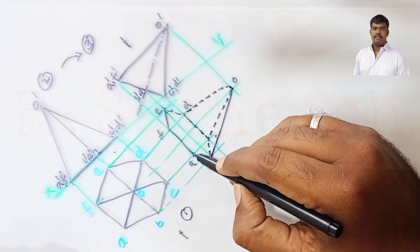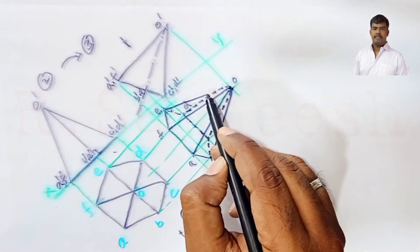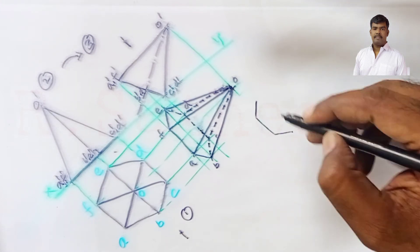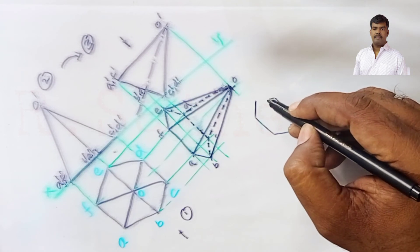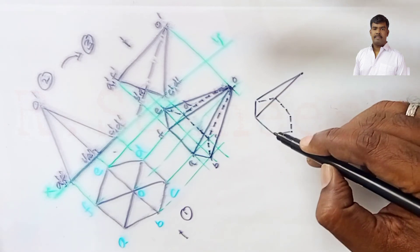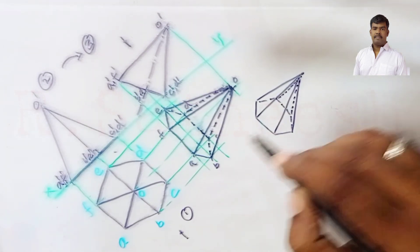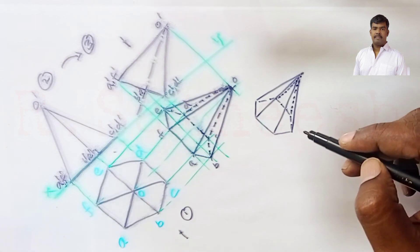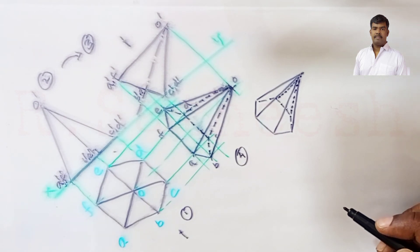So O-B, O-A, O-F and O-E are visible. Edges E to F, F to A, A to B are visible. B to C, C to D and D to E are invisible. The visible edges are joined with apex O, and C to O and D to O are hidden lines. This is our problem and its solution. Finally we get the fourth diagram. Thank you.